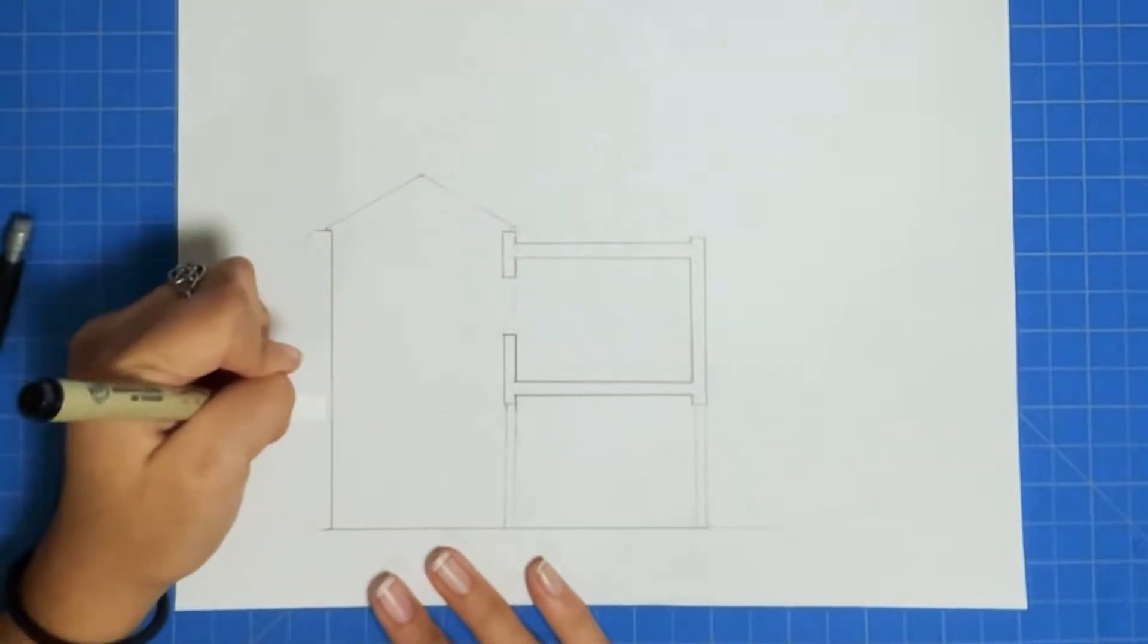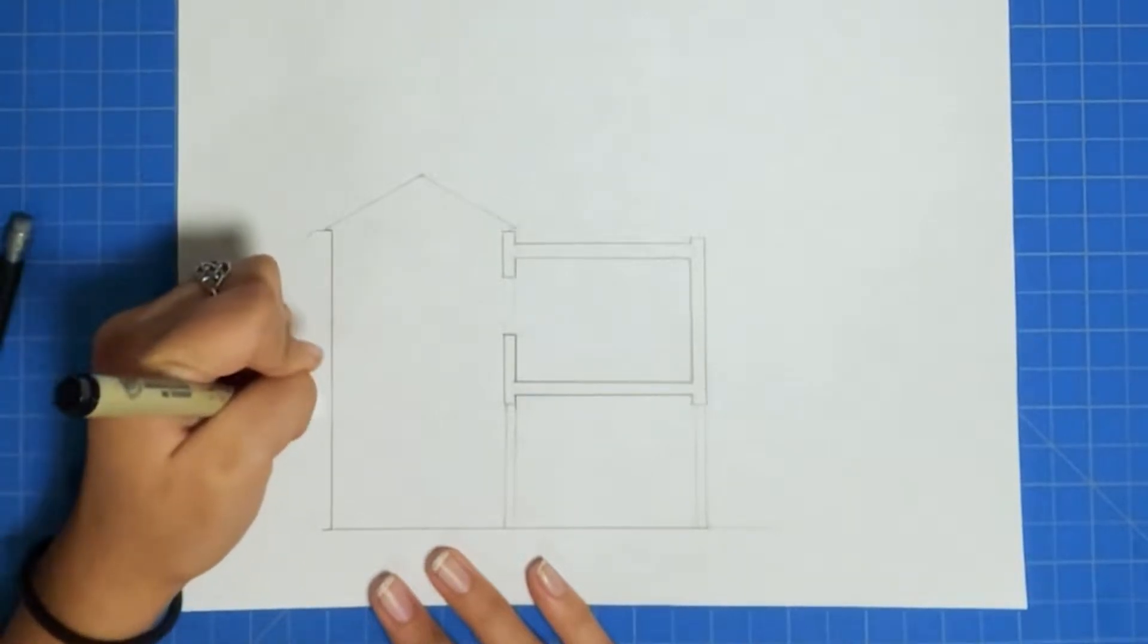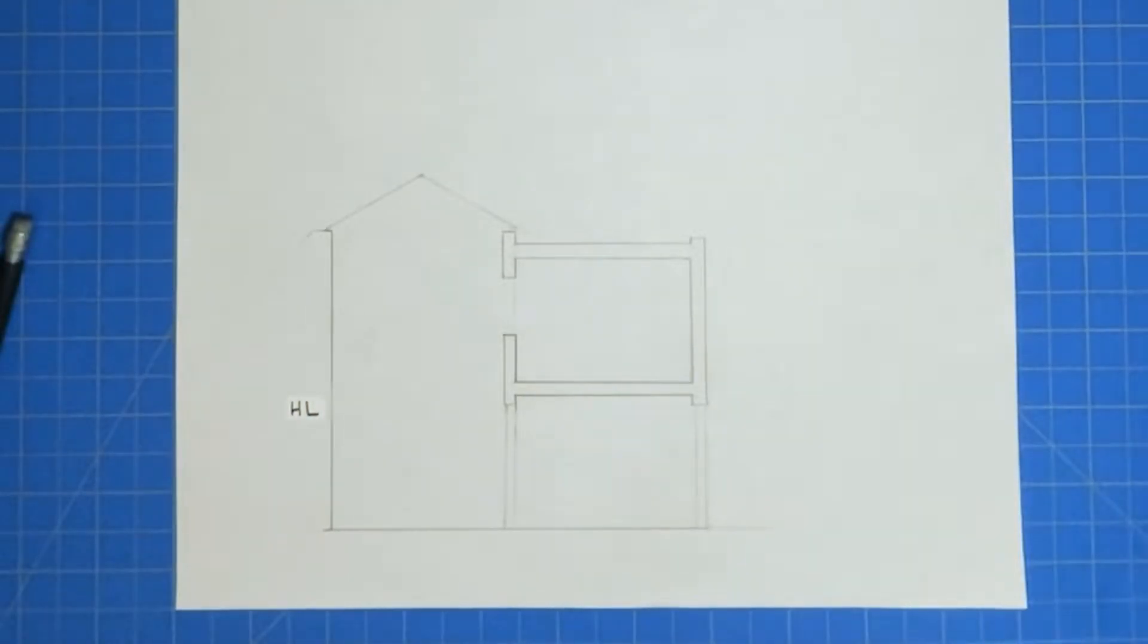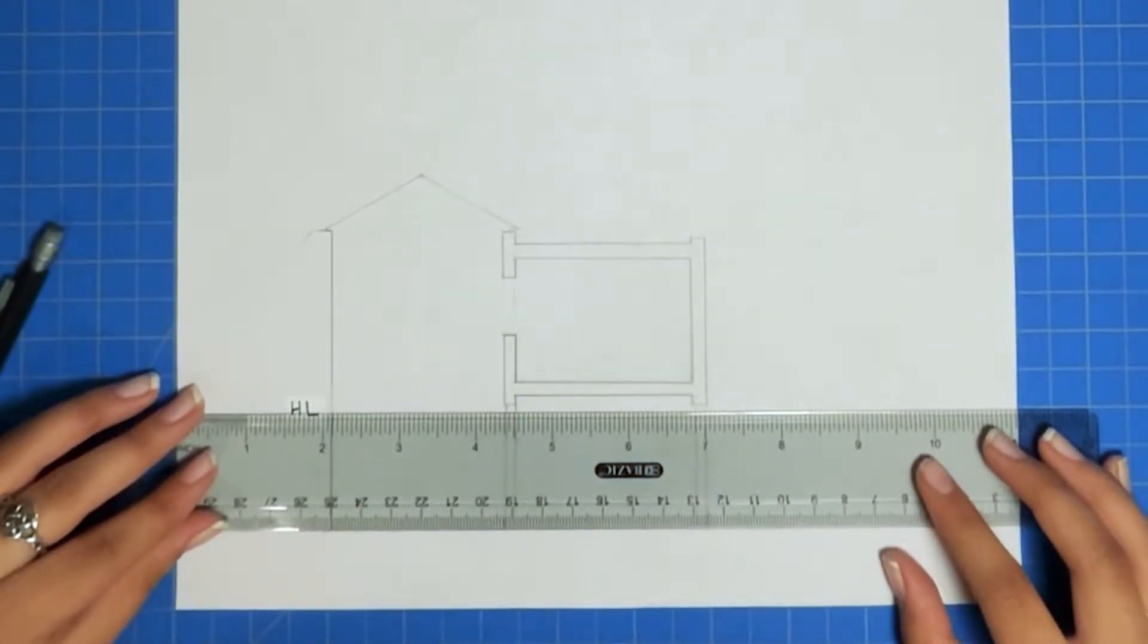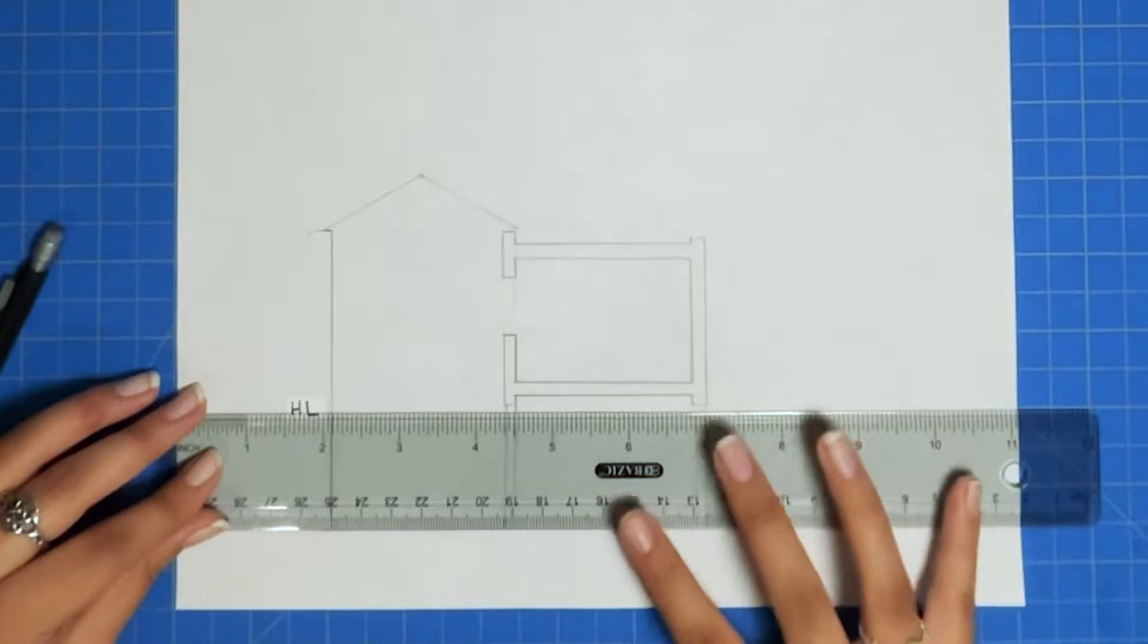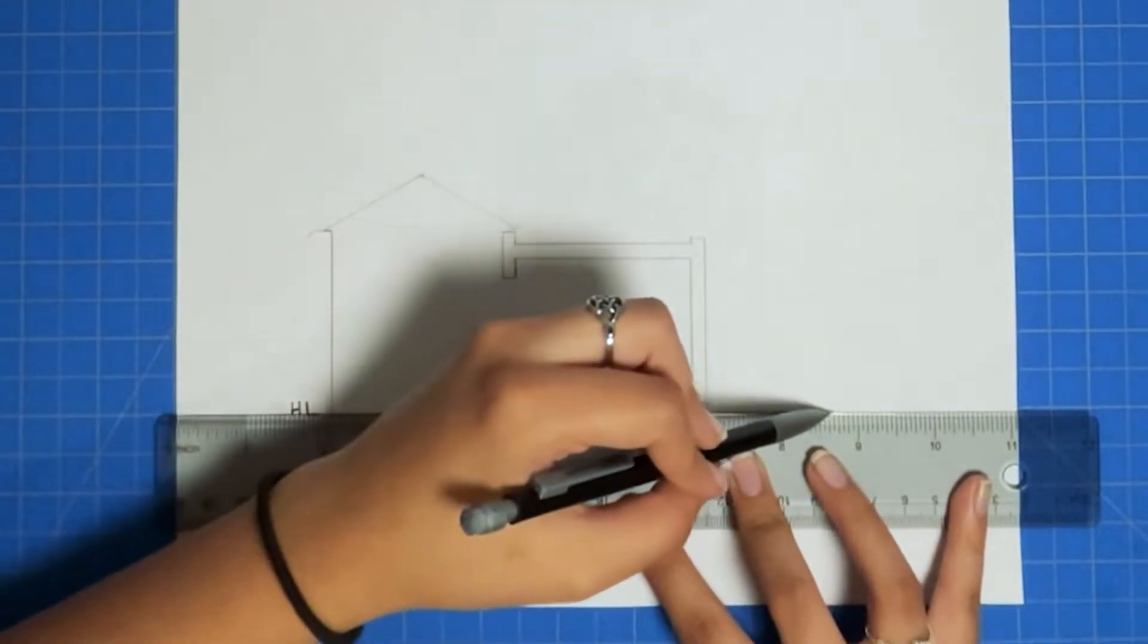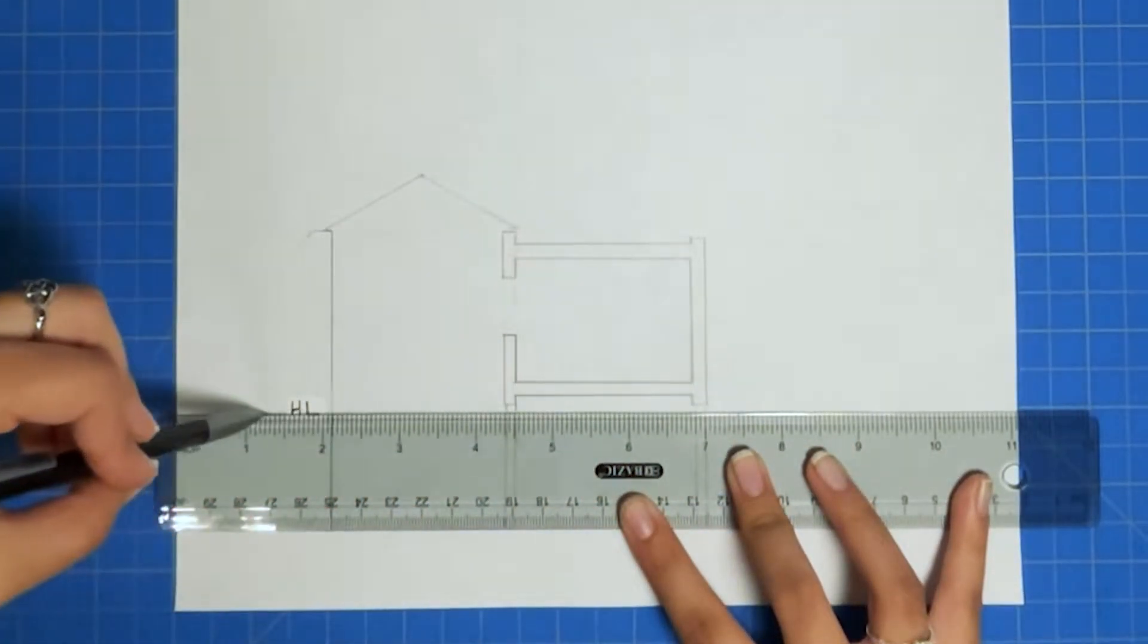So next we're going to establish what our horizon line is. You do not have to mark this out in marker. I just alluded where it was for the sake of the video. The height of your horizon line is going to determine what is seen because it is going to be the height of the eye level of the viewer.